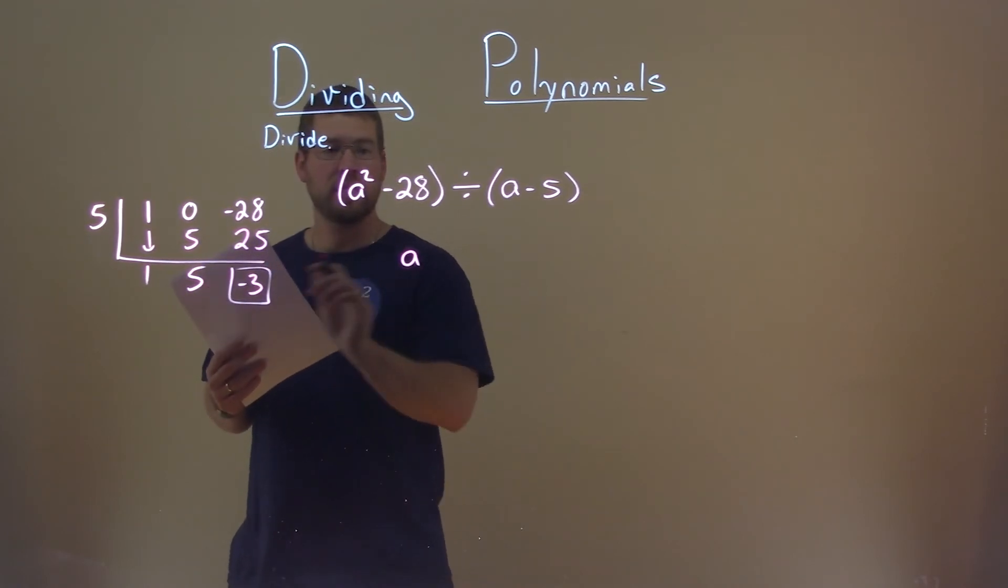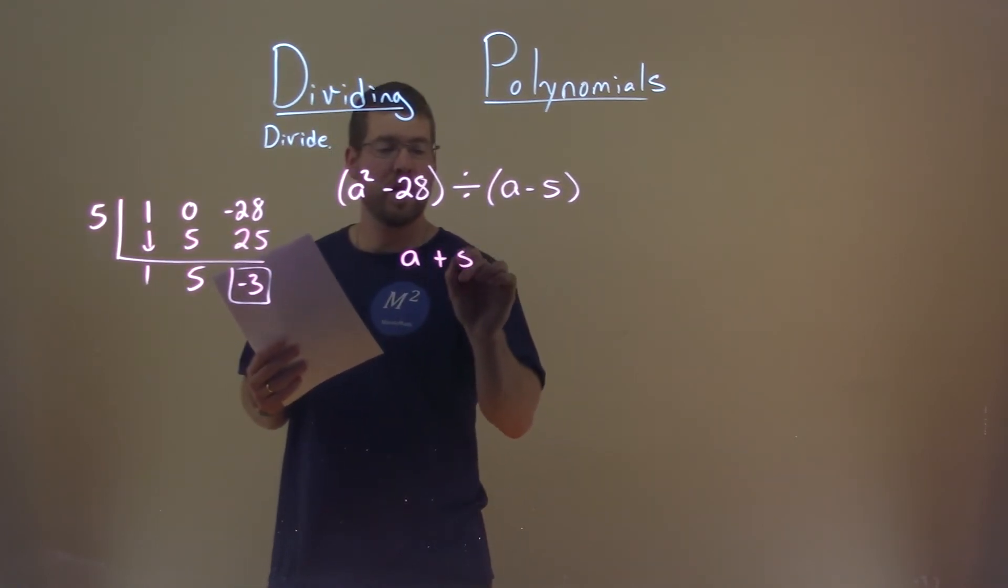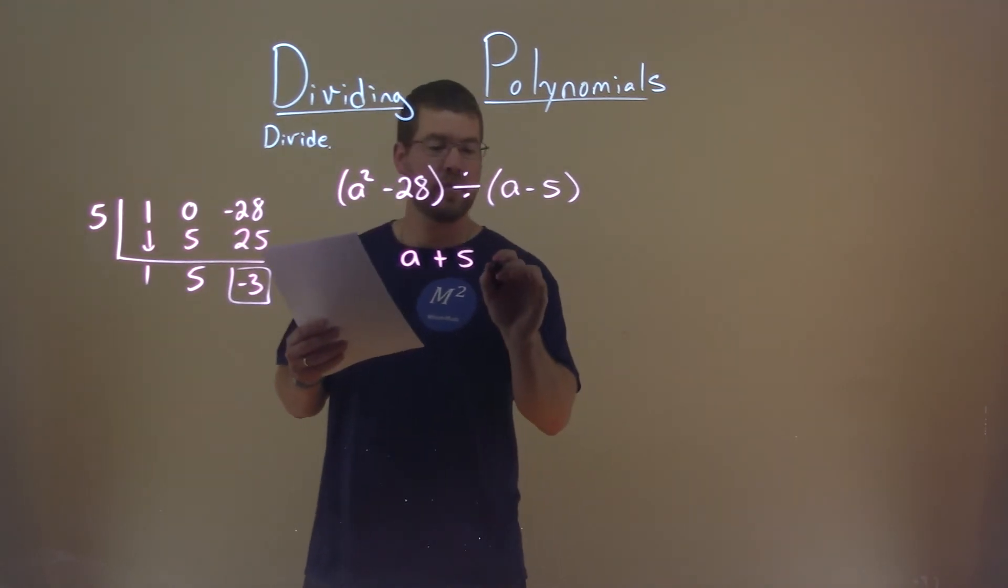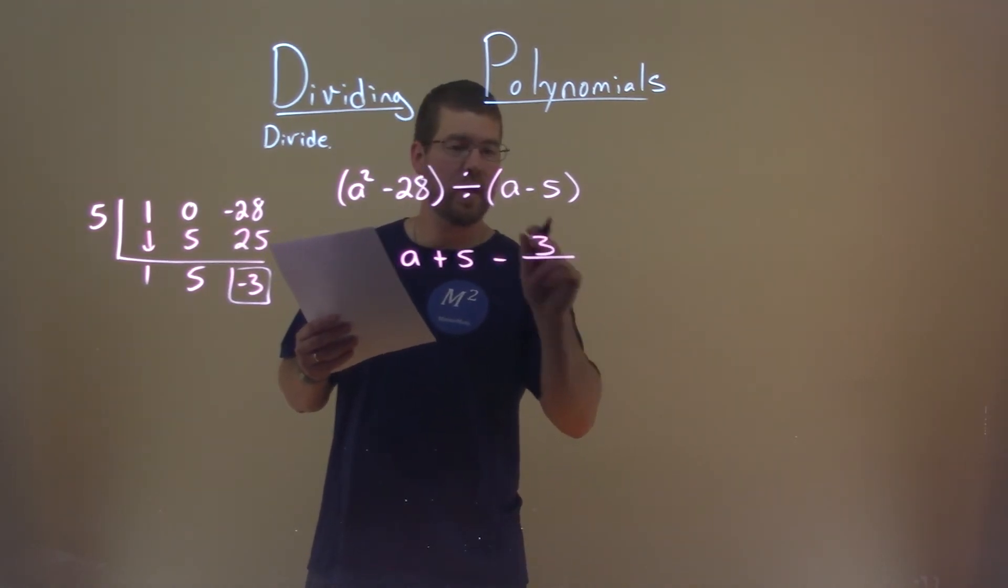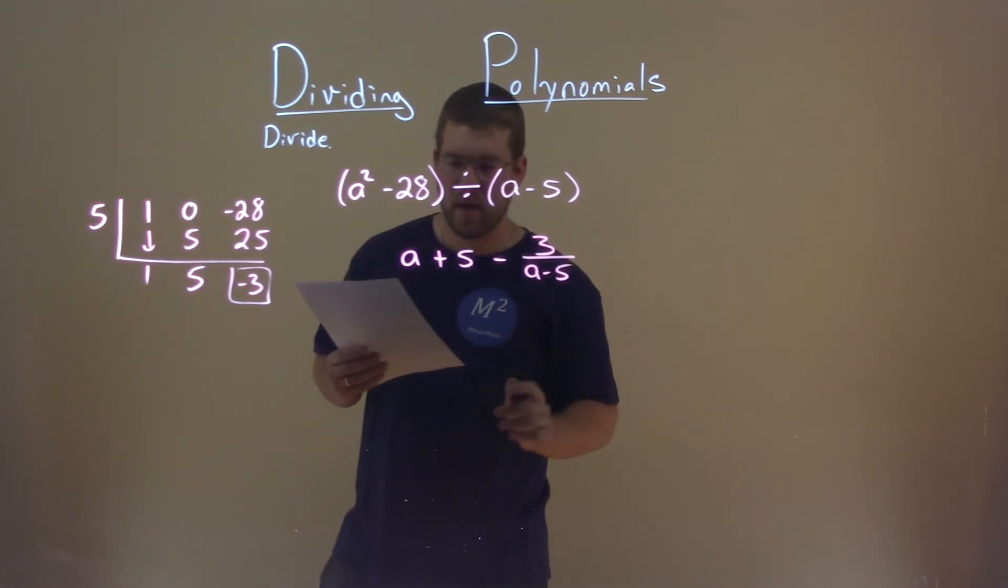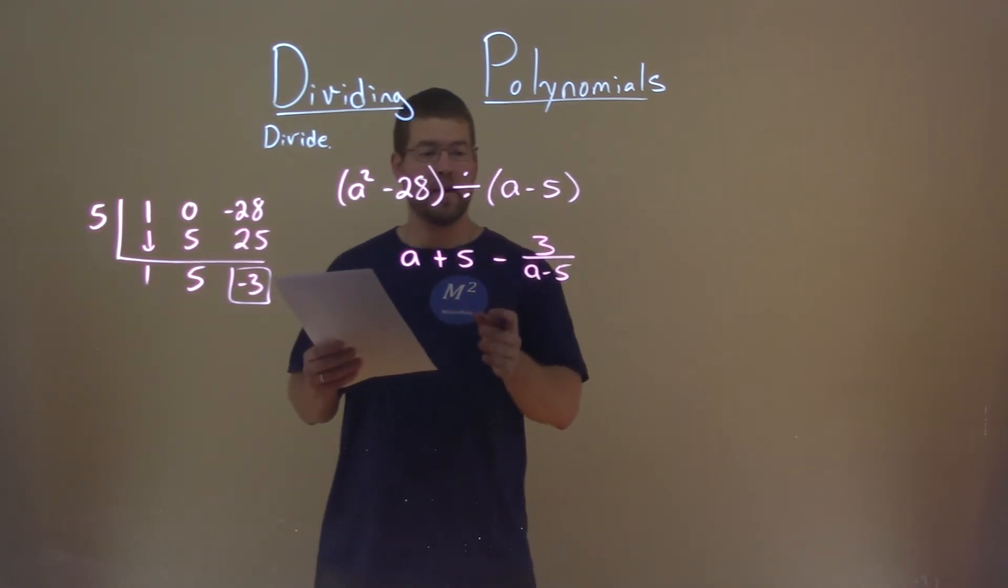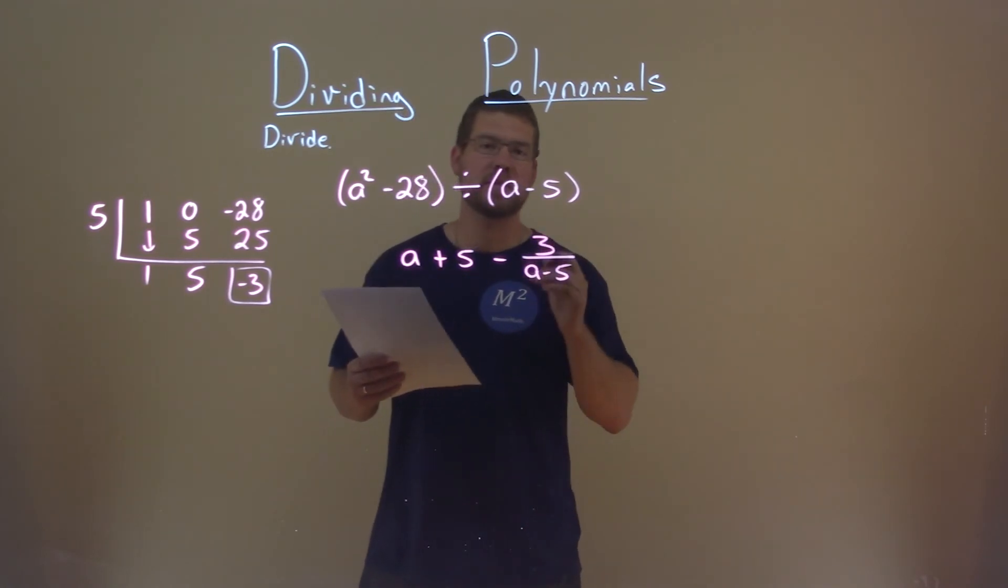Going down the line, we just have our constants, so we have a plus 5. Then, we have a remainder of minus 3. So, minus 3 divided by what we were dividing it by, a minus 5, right here. And so, there's our final answer: a plus 5 minus 3 over a minus 5.